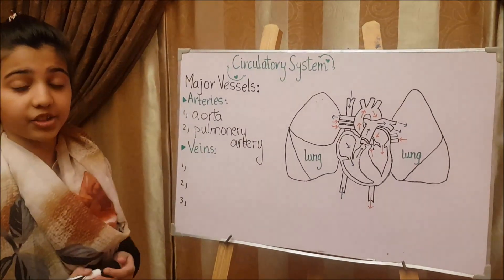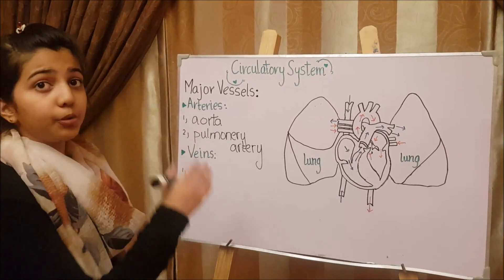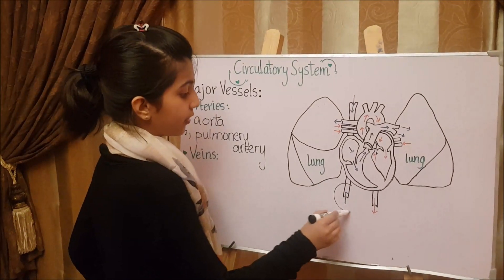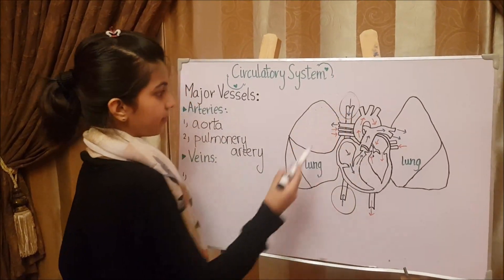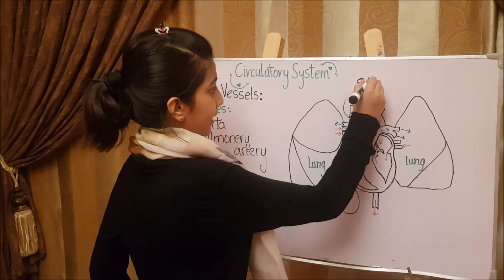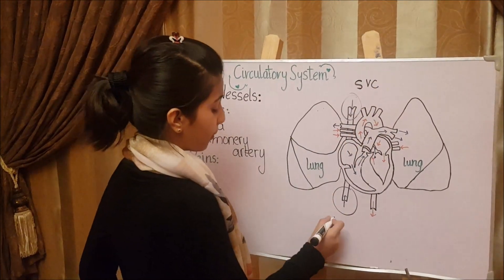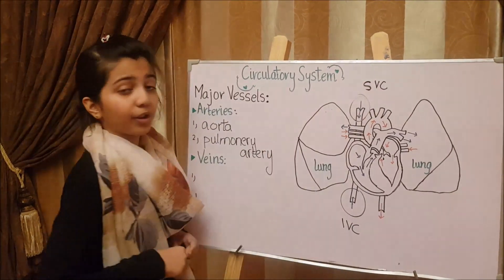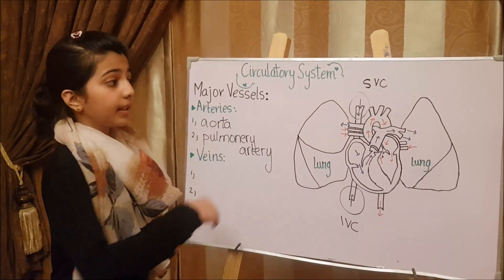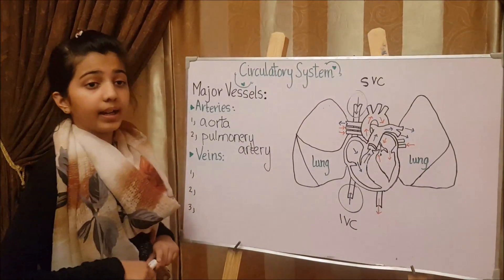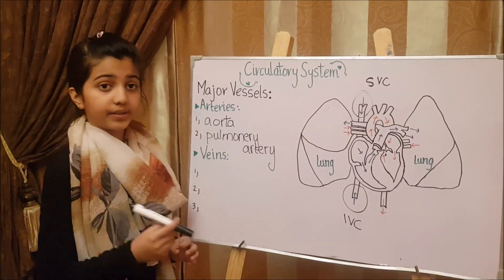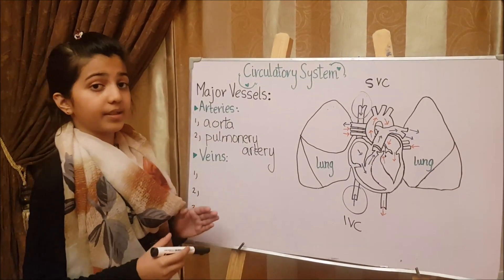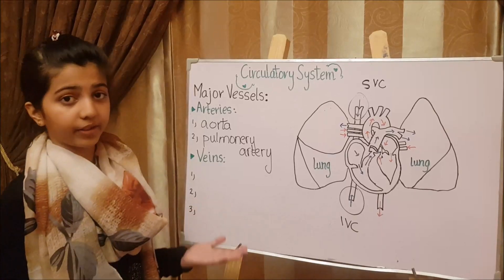The pulmonary artery takes deoxygenated blood from the heart towards the lungs. Coming towards the veins, you can notice two tube-like features. This one is called the SVC, and the lower one is called the IVC. IVC stands for inferior vena cava, and SVC stands for superior vena cava. The superior vena cava takes blood from the upper part of the body towards the heart, and the inferior vena cava takes blood from the lower part of the body towards the heart, so that the blood can again be oxygenated.